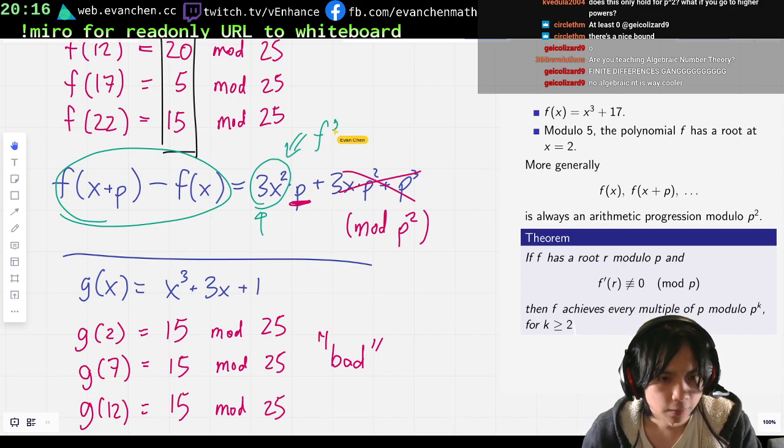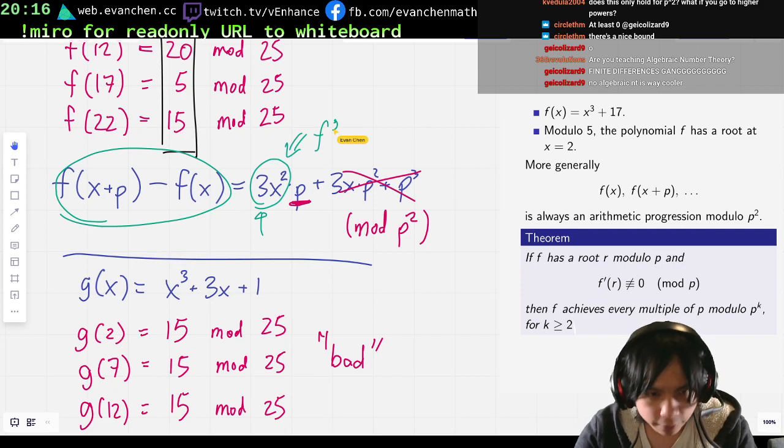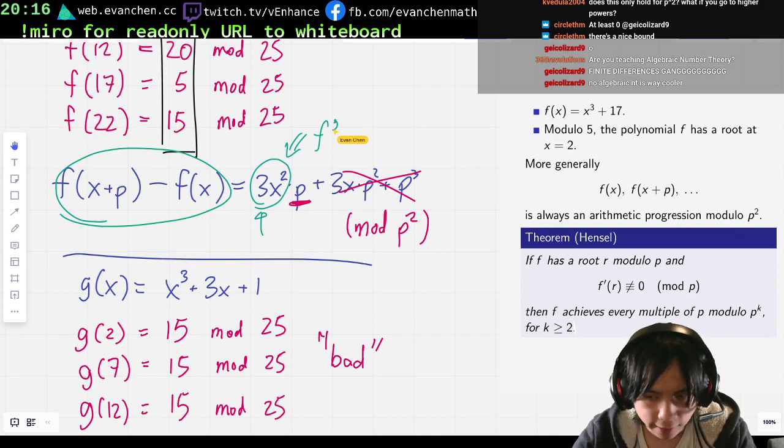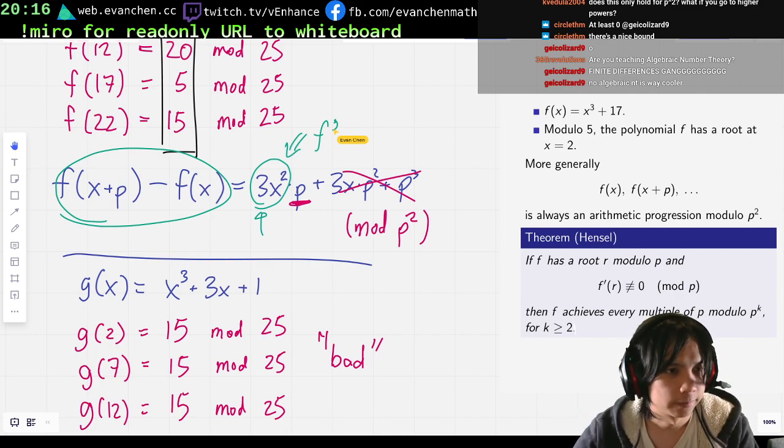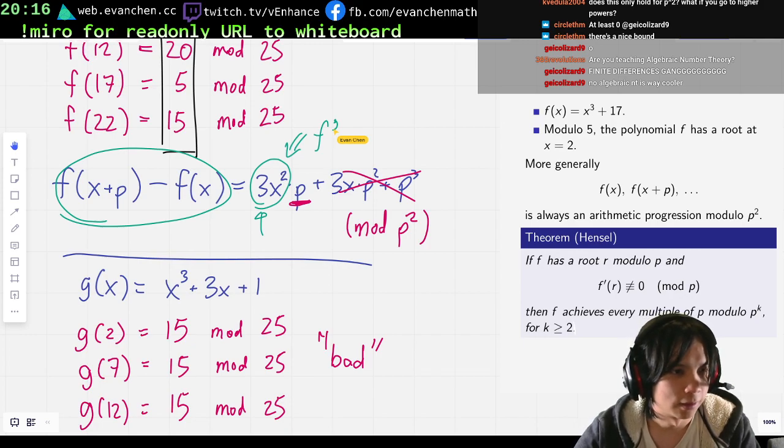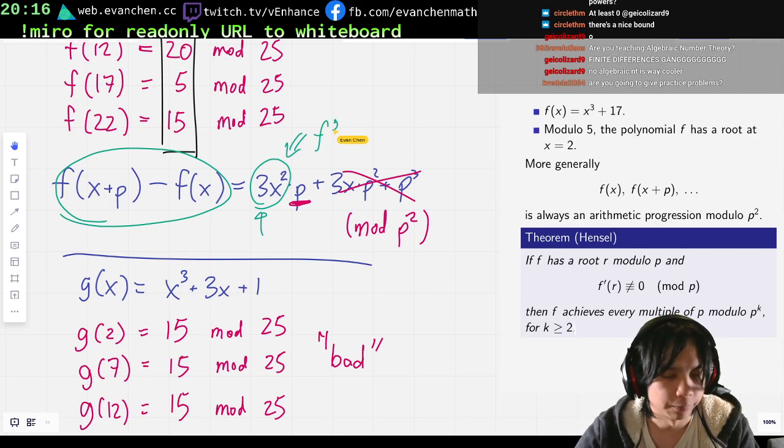So this result is called Hensel's Lemma. It is basically telling you that if you have a root modulo p, then by looking at the derivative, you can tell how that root behaves when I look modulo p squared, p cubed, p to the four, et cetera, et cetera. Okay. And that concludes the statement of Hensel's Lemma for Olympiad purposes. Again, when you look on Wikipedia, you'll find a version that is stated much more generally for algebraic number theory. But this is the statement here.